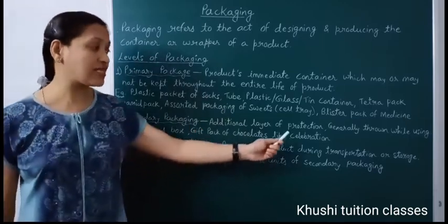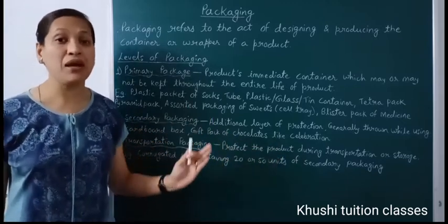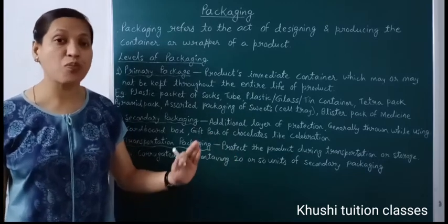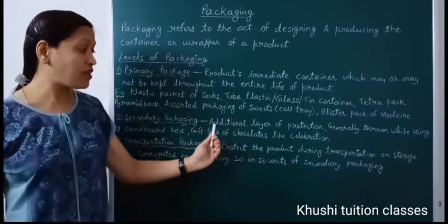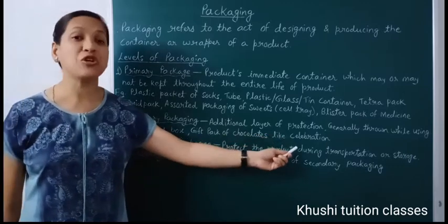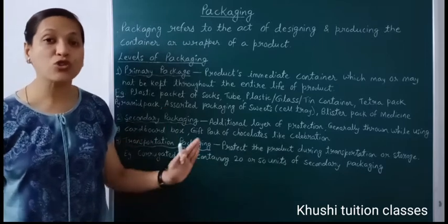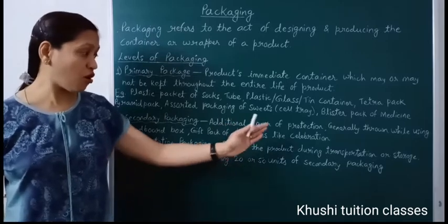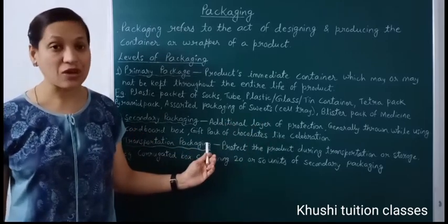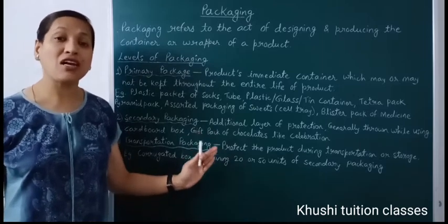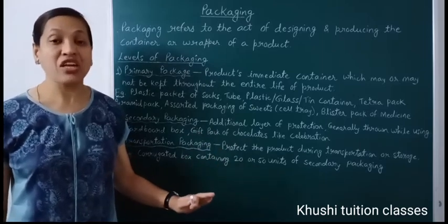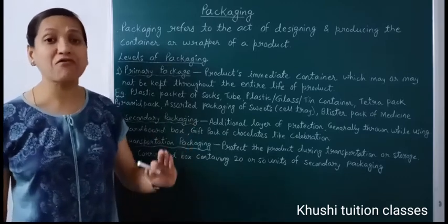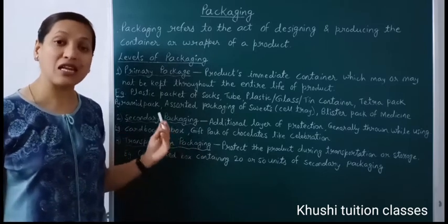Then gift pack of chocolates like Celebrations — जैसे एक-एक chocolate Dairy Milk या 5 Star की packaging अलग होती है, वह primary packaging है जो product का immediate container है। लेकिन festivals के समय company एक celebration pack देती है, जो एक cardboard box होता है और उसमें different types of chocolates होती हैं। So the cardboard box of Celebrations is the secondary packaging। इसी तरह friendship day पर भी chocolates का gift pack आता है — homemade chocolates का immediate container होता है, उसके बाद उसका एक gift pack होता है जो secondary packaging है।